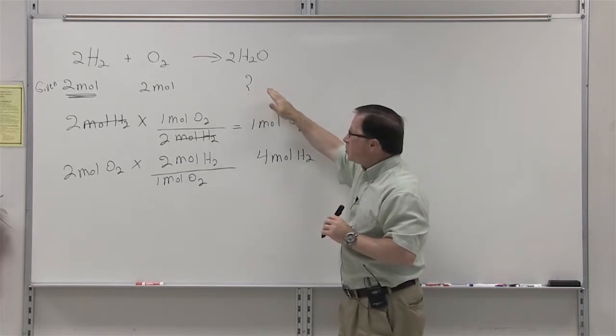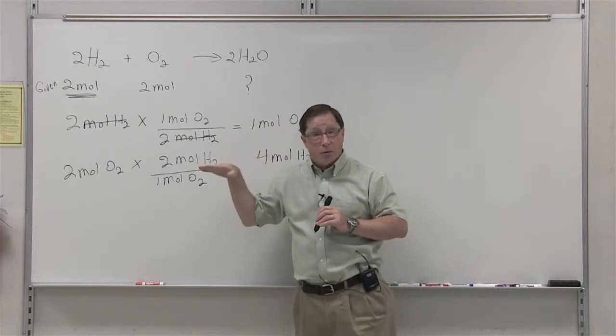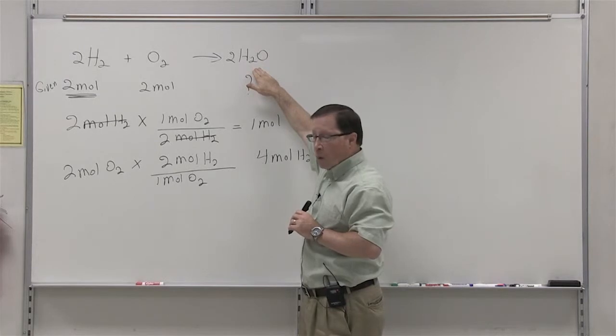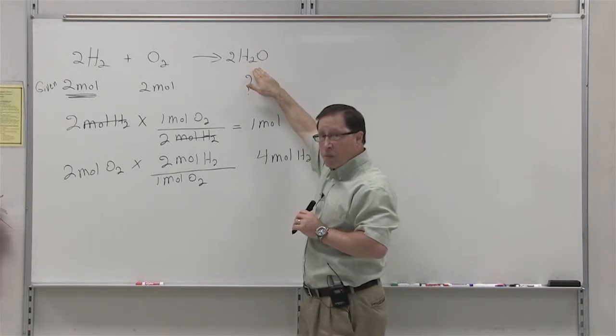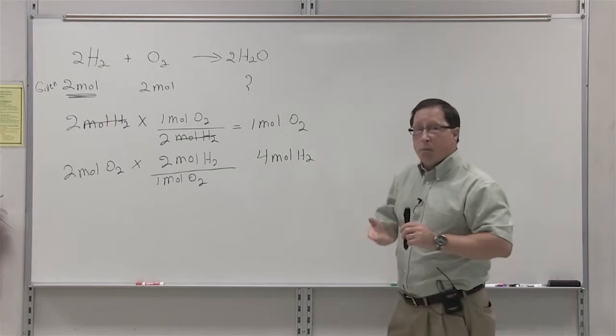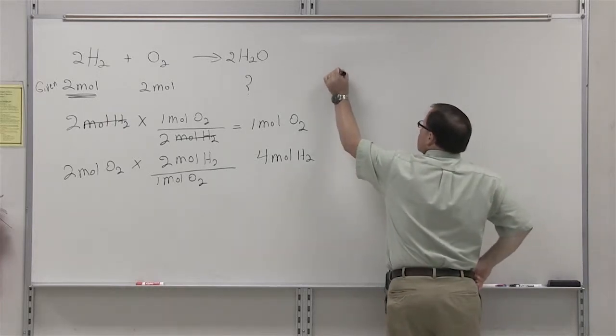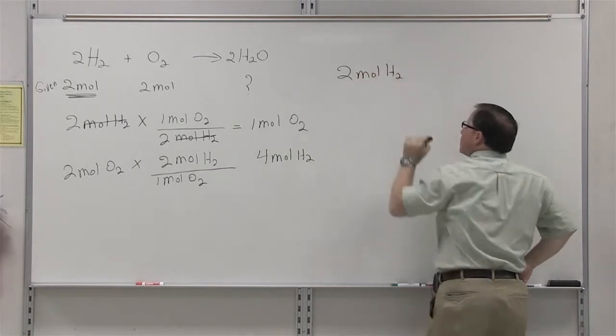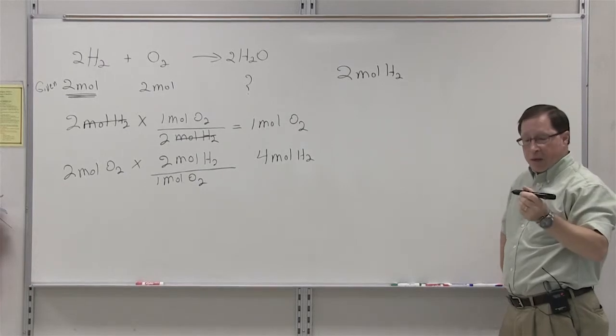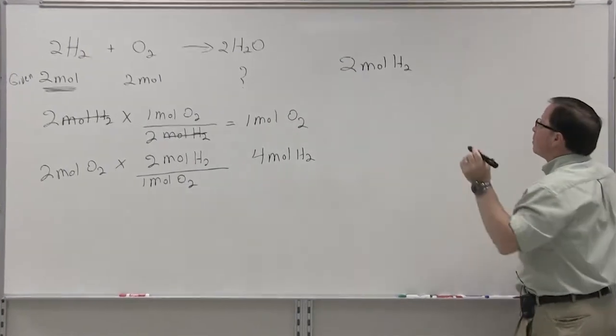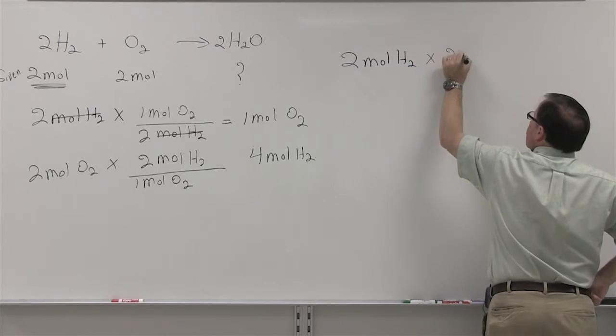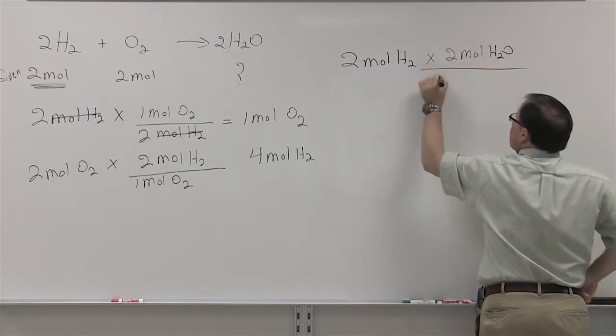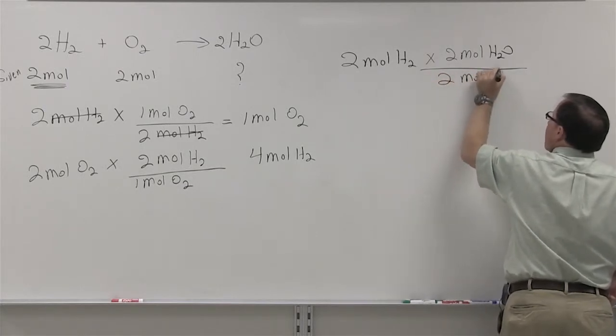It is interesting to note that when you have a limiting reagent, the quantity of product water that we form can be calculated from that limiting reagent and it's a simple matter to do. We say that there's two moles of hydrogen. That's our starting point. That's our limiting reagent. Times two moles of water for every two moles of hydrogen.